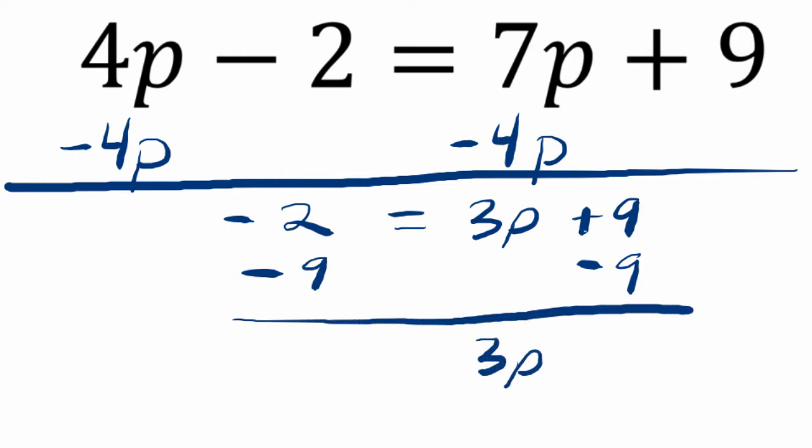and then 3p equals, well, negative 2 minus 9 is negative 11. So,